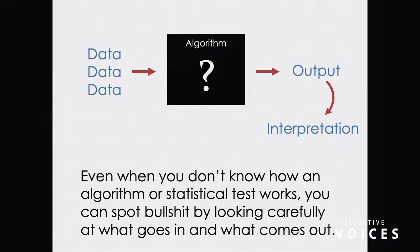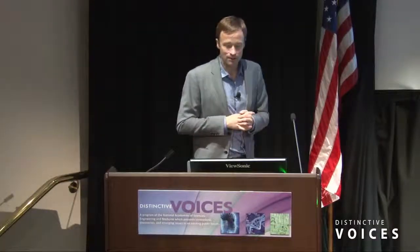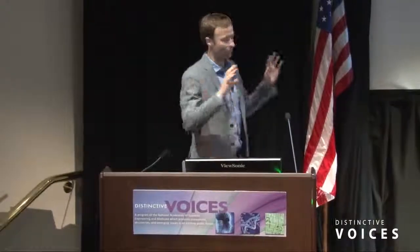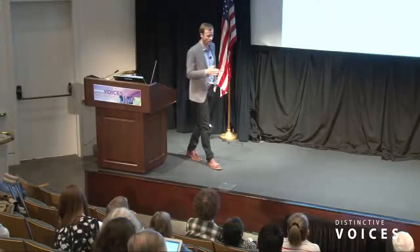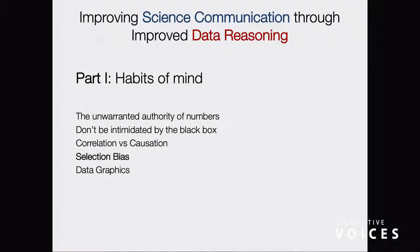There are times when we get into the black box — I have students that work on computer vision and network science — and we do want people to know the black box if it's there. But many times, if you focus on these other parts, that's the key. What I wanted to do tonight to end the talk was highlight a few of the key things that when we talk to the public, we really want them to know. I've already talked about the unwarranted authority of numbers, so just make people aware of that. Don't be intimidated by the black box. And there are lists and lists of things. These are the last things I'll quickly go through: correlation versus causation, and selection bias.